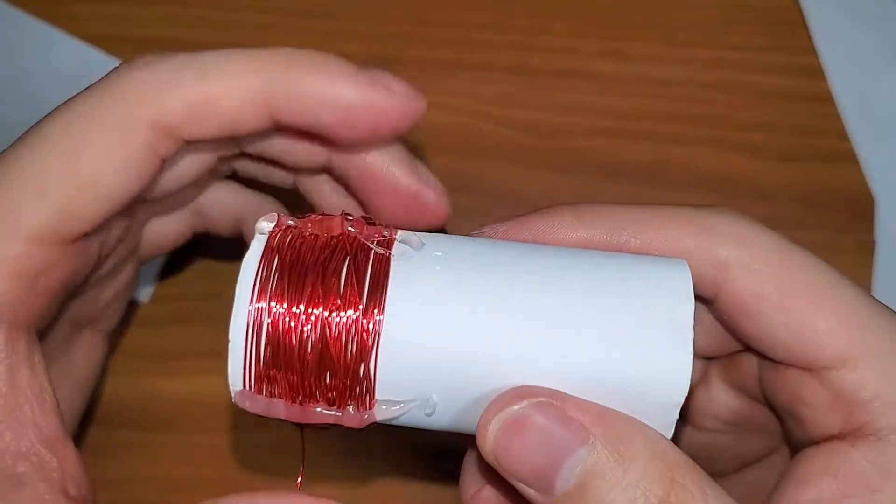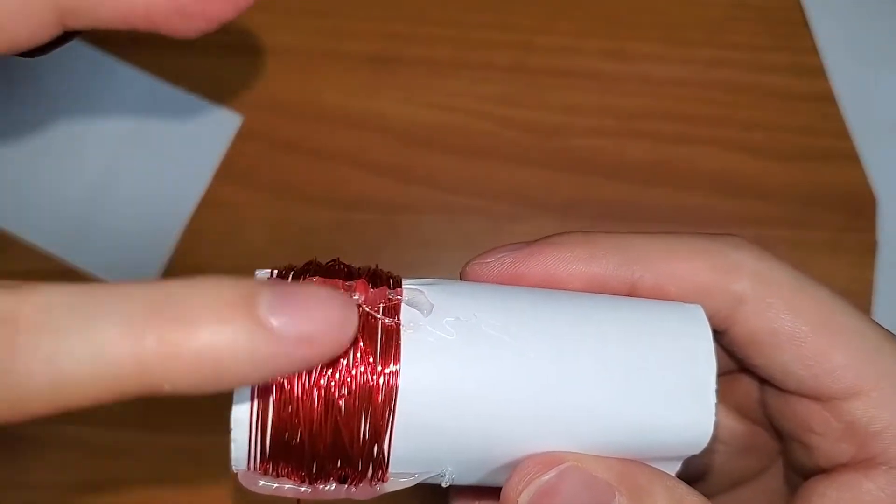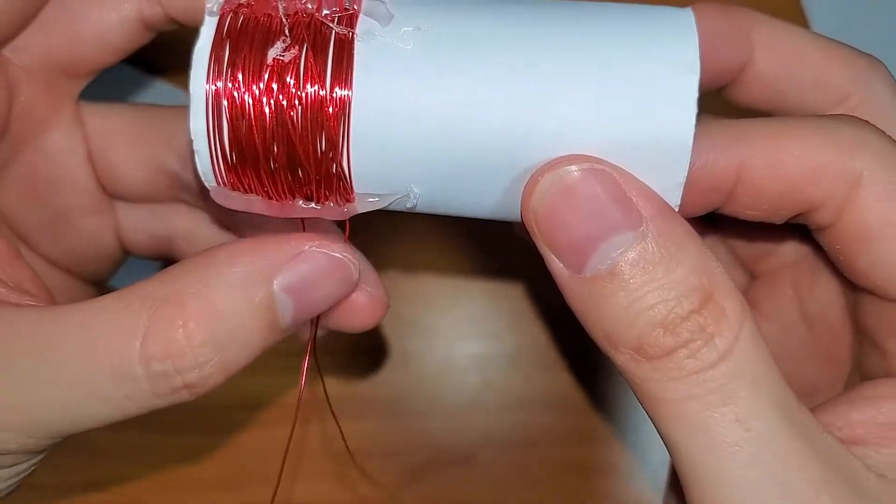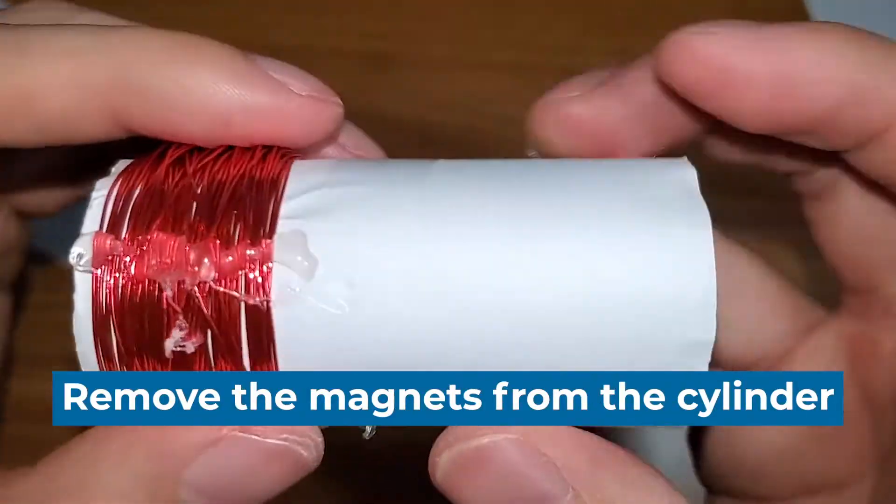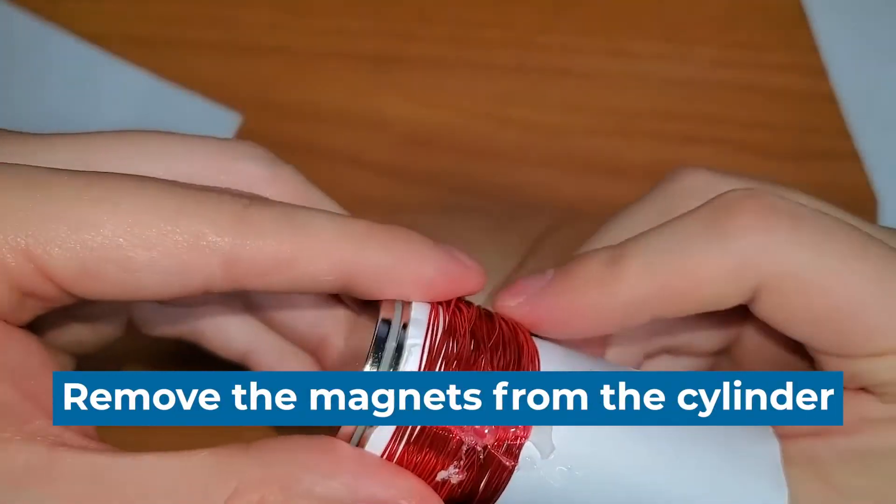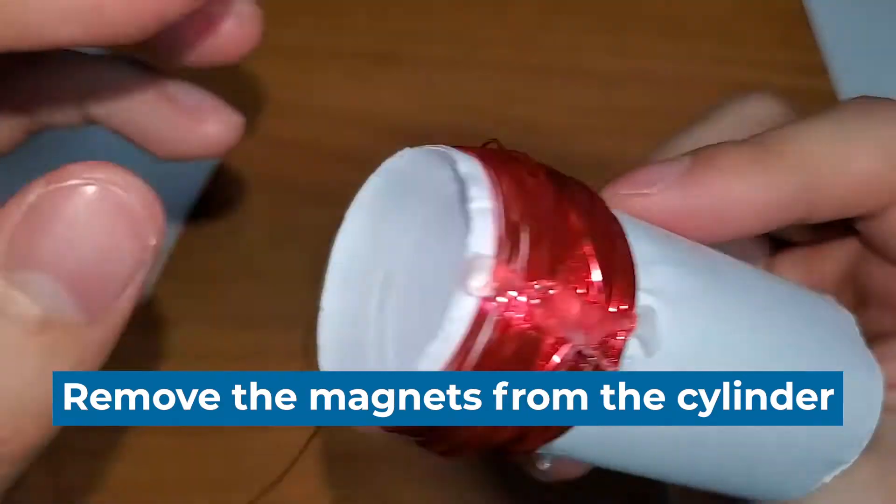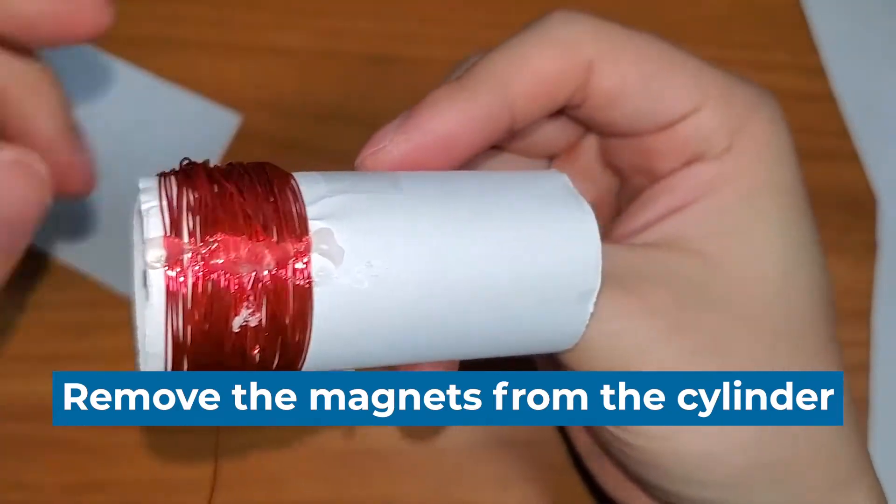Once your glue has dried all the way, we can go ahead and do the next step. So what we need to do is to actually remove the inside of our cylinder. We're going to push out the magnets and then remove any of the external pieces of paper that we're no longer needing. So we only want to use the external one.